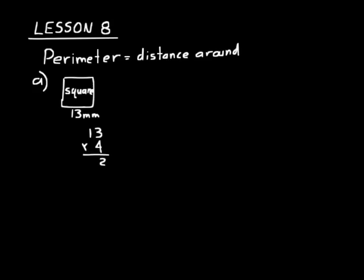Three times four is 12, carry one — 52. Remember, whenever we're dealing with measurements we have to write our units down too. The number means nothing without the units — that's half the problem. When you're grading your work or tests, you should do half credit: half for the number, half for the units. So the perimeter or the distance around that square is 52 millimeters.